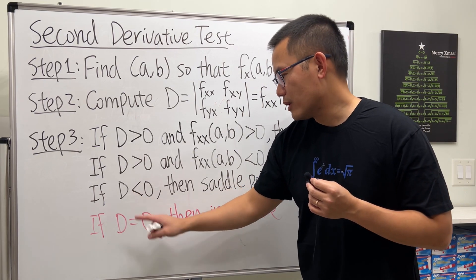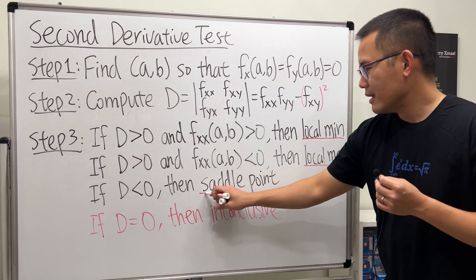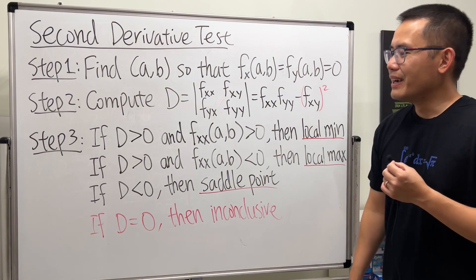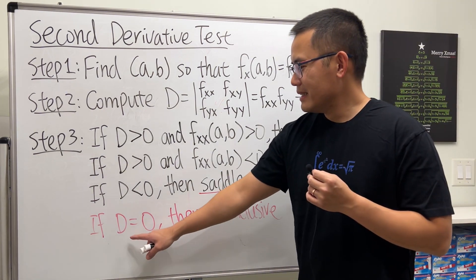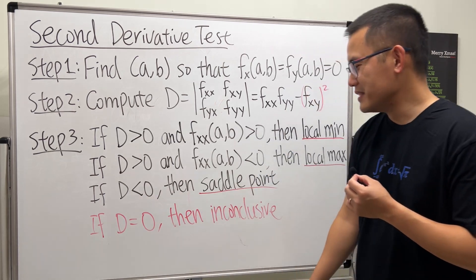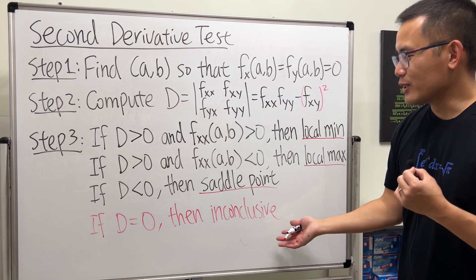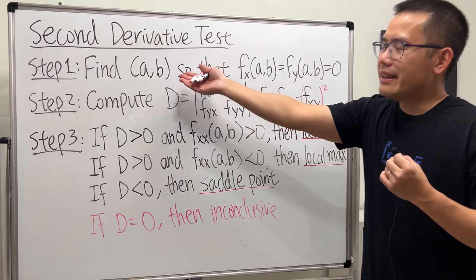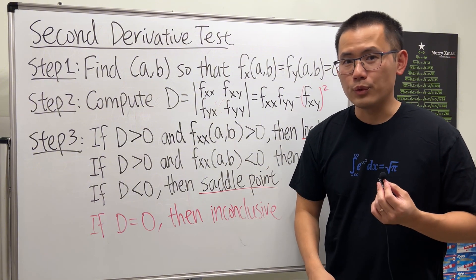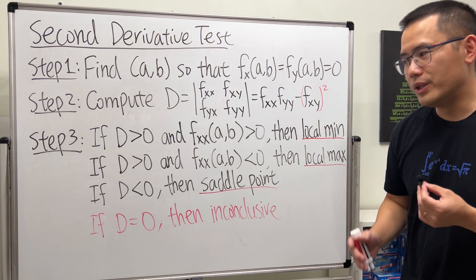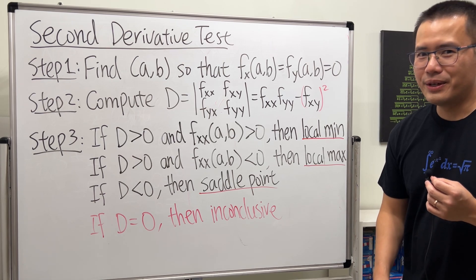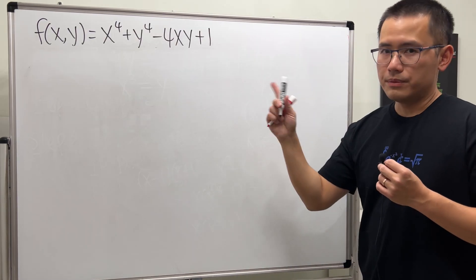If the D value is less than zero, you are going to have a saddle point. If D equals zero, unfortunately we cannot draw any conclusion — the point at (a, b) could be a local min, a local max, or a saddle point. We just don't know.